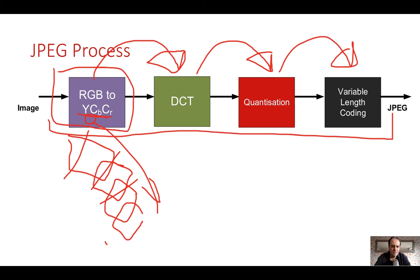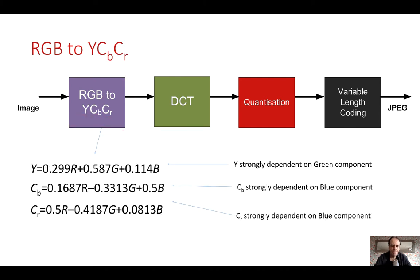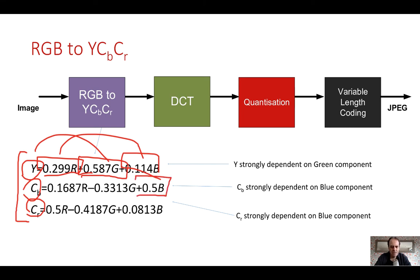The first part is to convert into luminance and then our CB and CR. As we saw before, the green component has most influence on the luminance, red to a lesser extent, and blue to even less extent. When we calculate CB, blue has the greatest effect, and when we look at CR, red has the most effect.